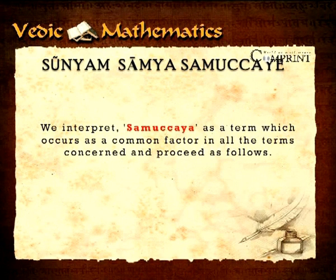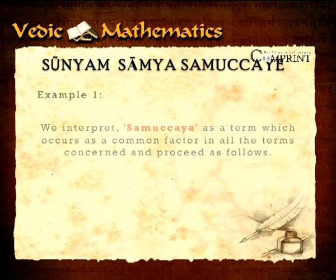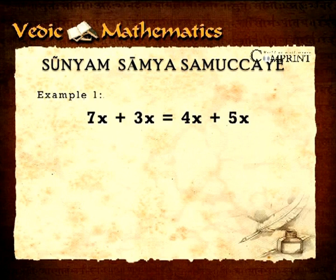For example, in the given equation 7x plus 3x equals 4x plus 5x, which has the same factor x in all the terms, hence by the sutra it is zero, that is x equals zero. Otherwise we have to work like this: 7x plus 3x equals 4x plus 5x, which is 10x equals 9x, and 10x minus 9x equals zero, therefore x equals zero.